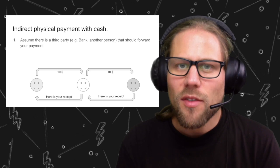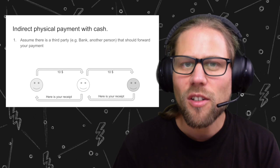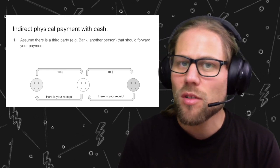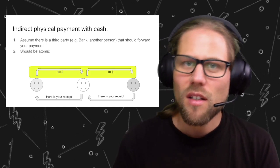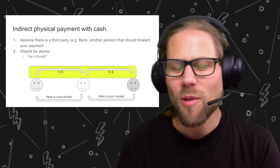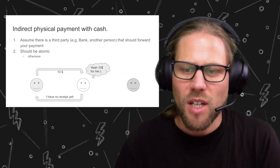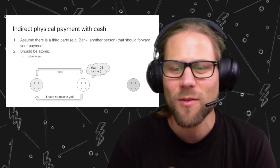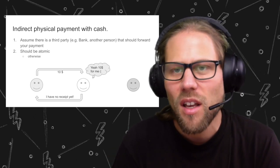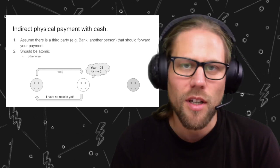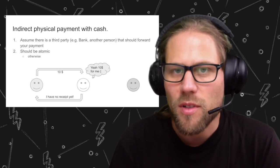How would the situation change if you have a third person in between — a bank or just another person — where you say: I want to pay $10 to somebody, I give it to a third person, and that person should forward the payment. This entire process should be atomic — either the money arrives or you don't pay at all. But can it be atomic? You somehow have to trust the person in the middle, because otherwise that person might just keep the $10, buy some ice cream, and the other person who was supposed to sell you the good never receives the money. You lose your $10.